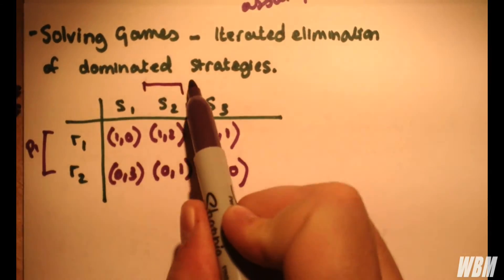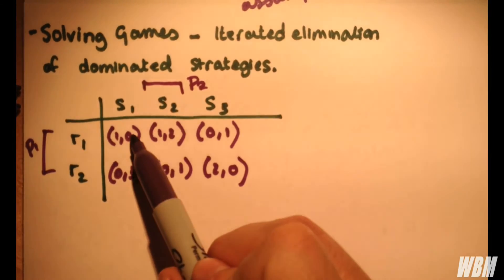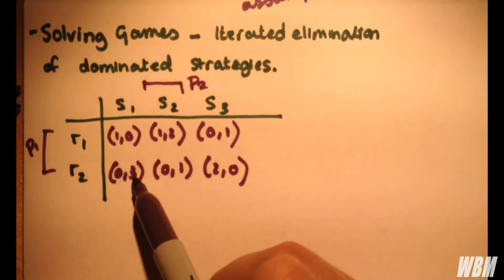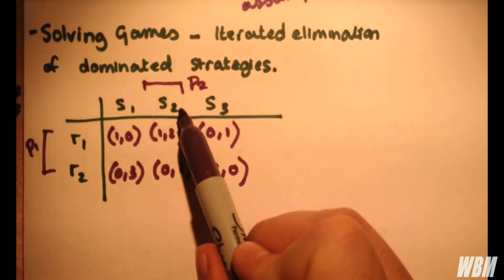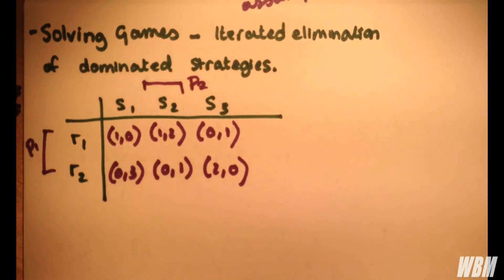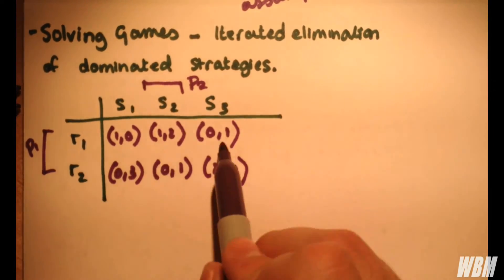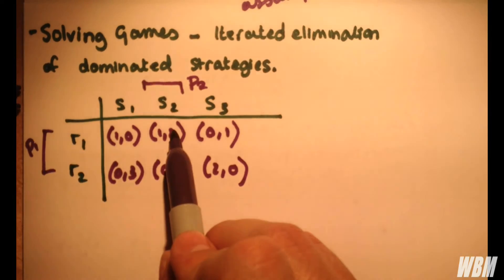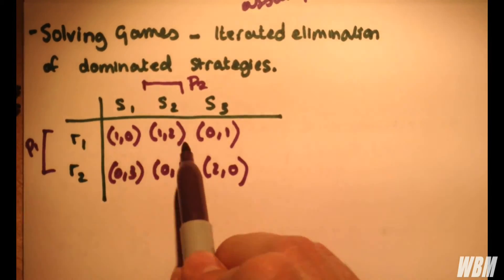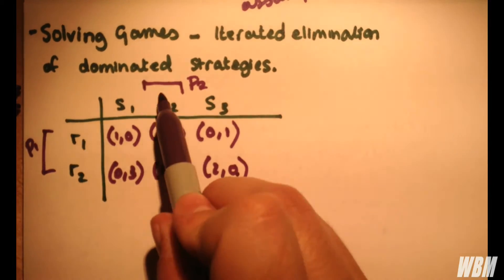So what we do now is we see if player two has any dominated strategies. So for strategy S1, we have 0 and 3. For strategy S2, so for player two, we want to see if there are any dominated strategies. So if we look at strategy S3, we have 1 for R1, which is less than 2 and greater than 0. And we have 0, less than 1, less than 3.